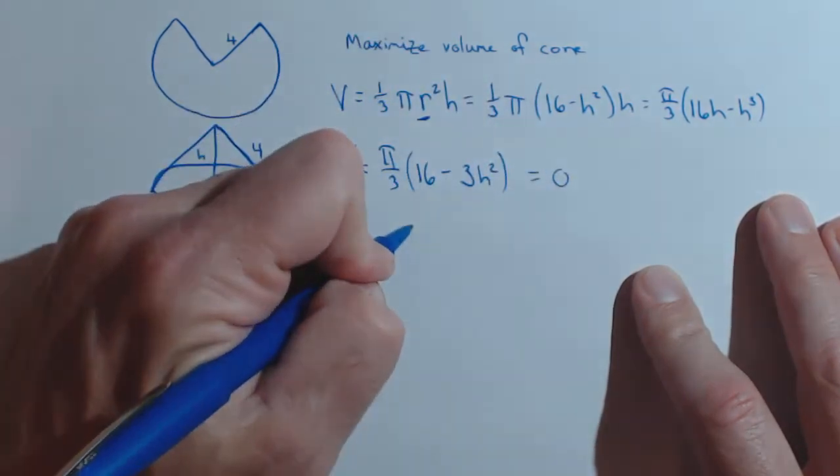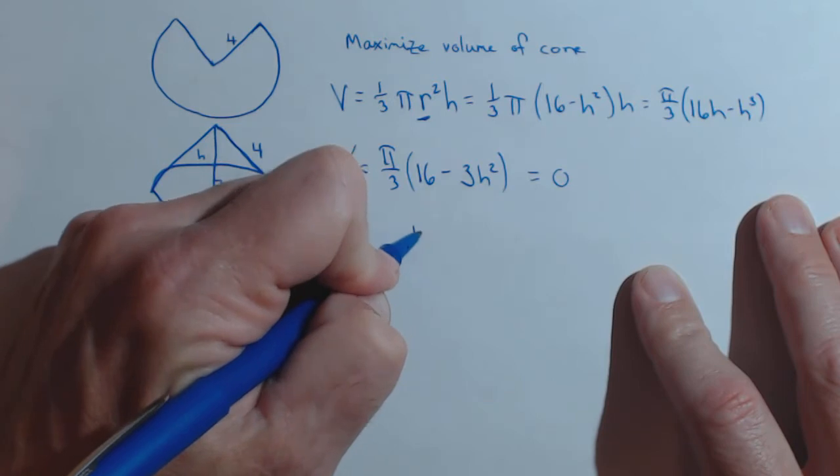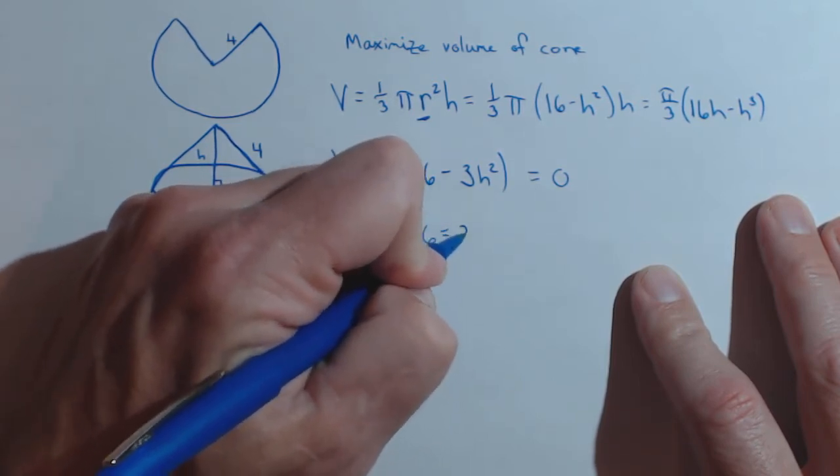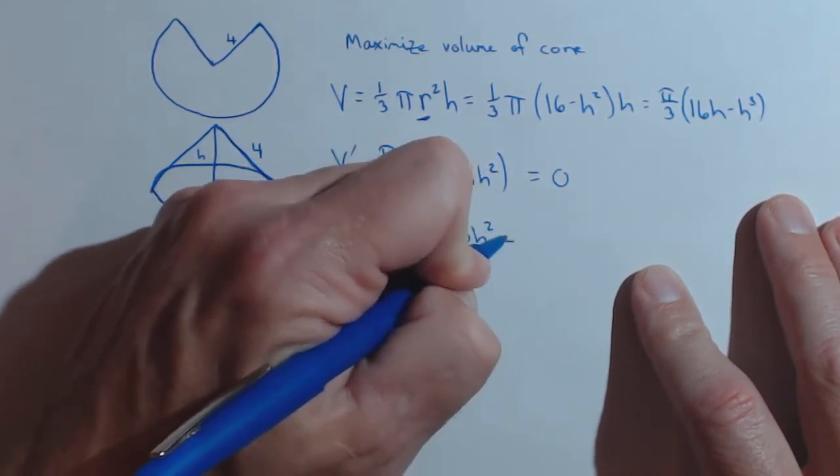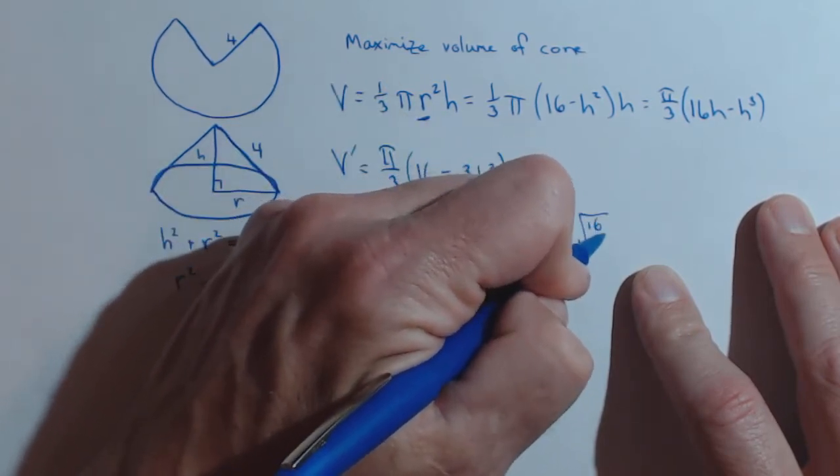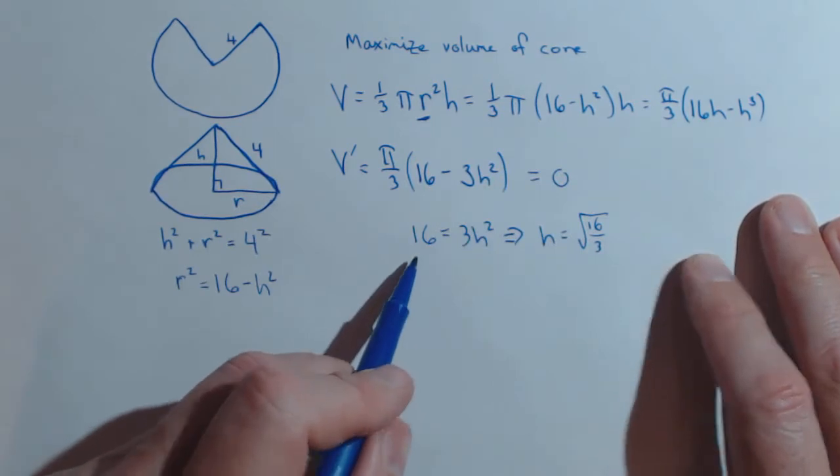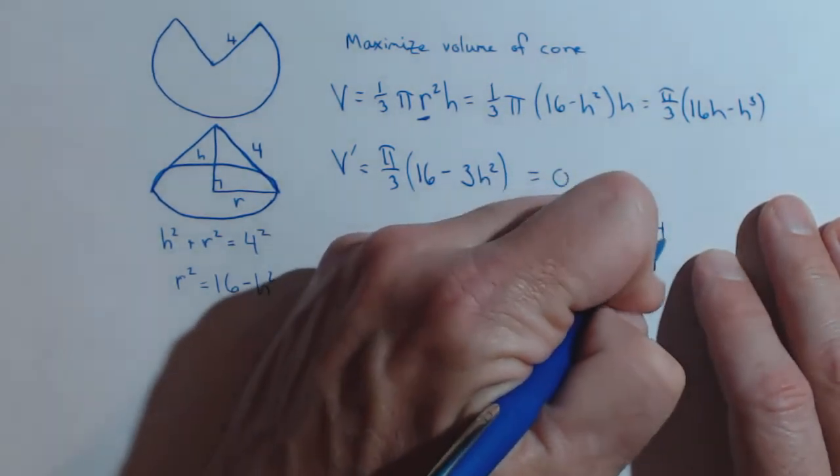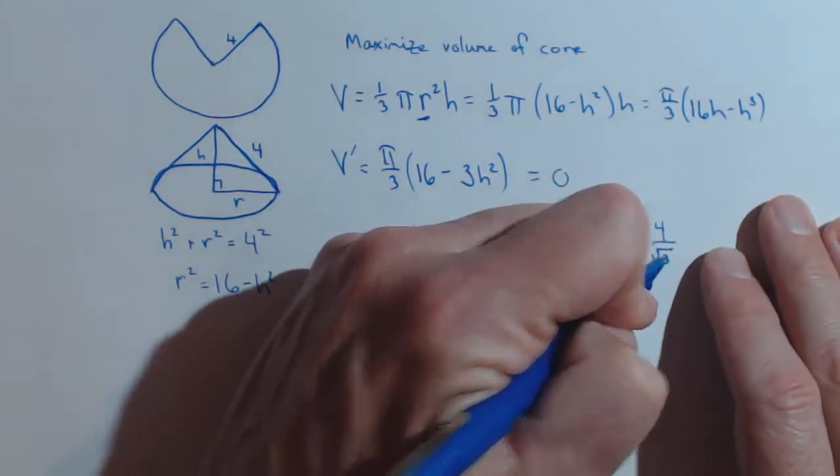And we set that to 0. This is the only piece that can be 0. So that's going to happen when 16 equals 3h squared, or when h equals the square root of 16 thirds, or if we want, 4 over square root of 3.